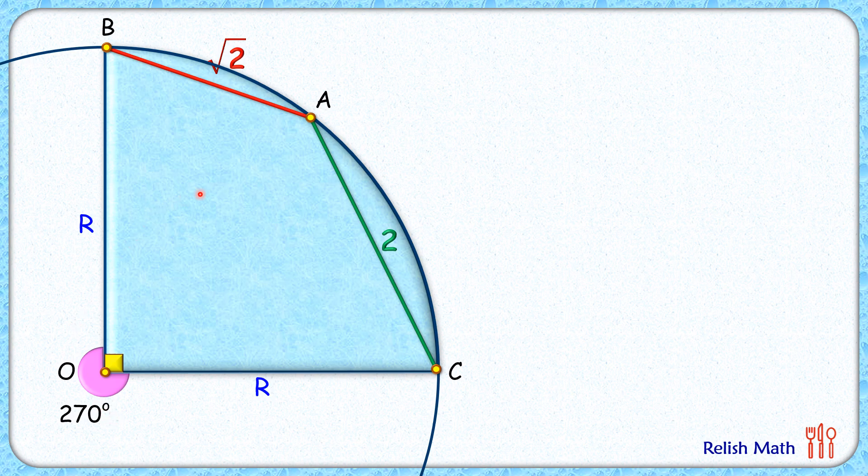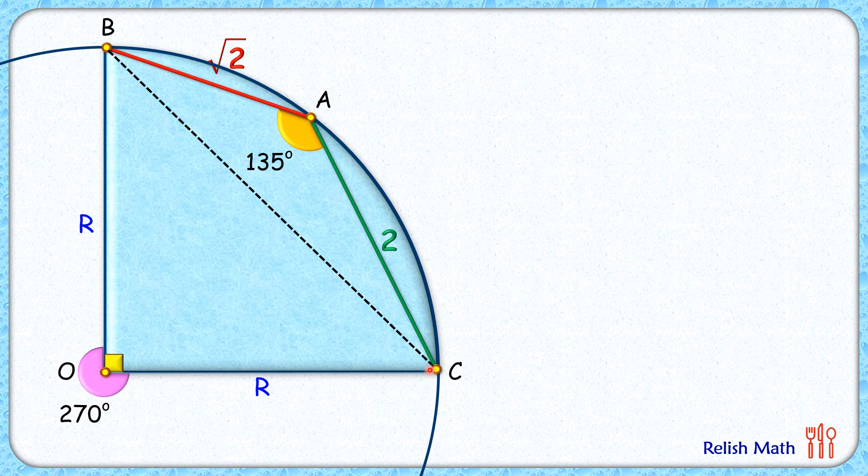And by theorem, the angle formed in this blue sector at the circumference, that is this angle A, will be half of 270 or 135 degrees. Let's join BC here. Now triangle BOC is a right angle isosceles triangle.